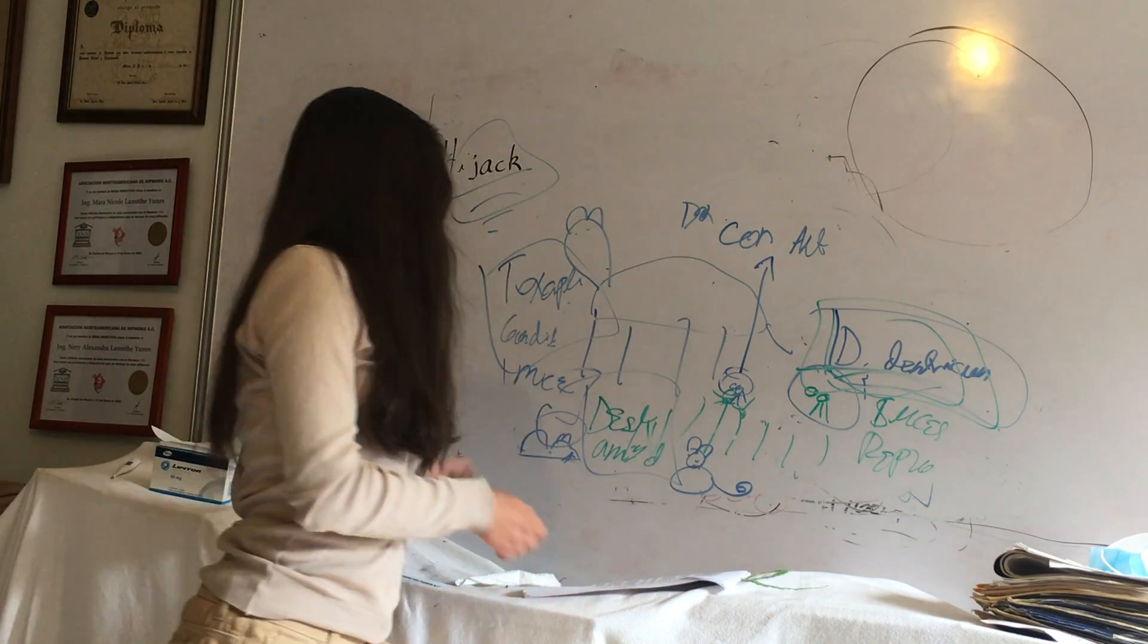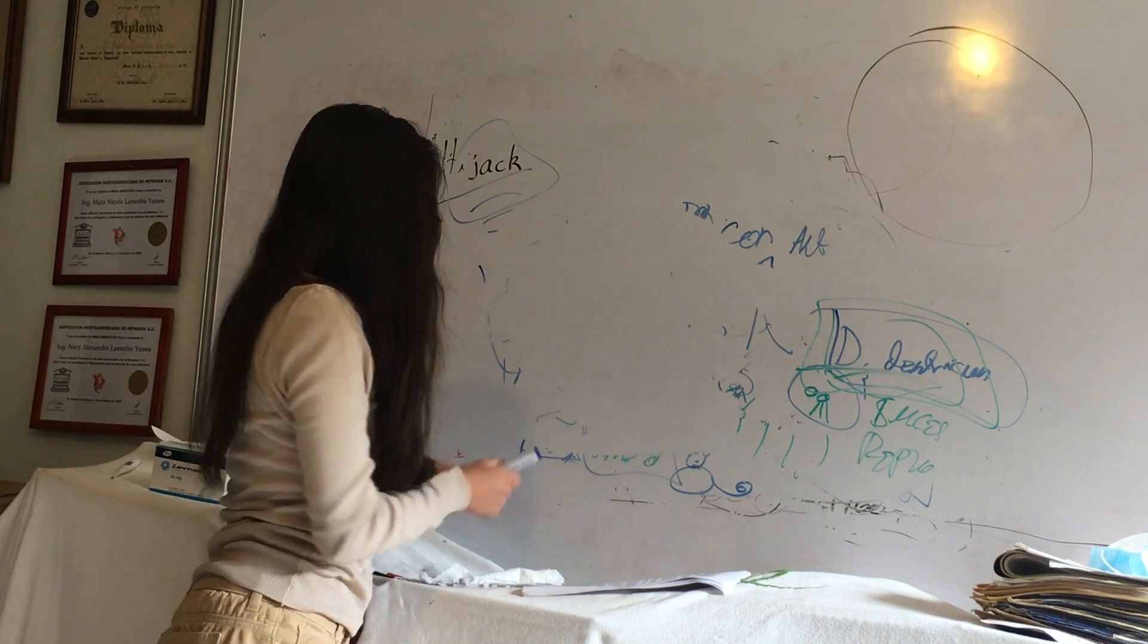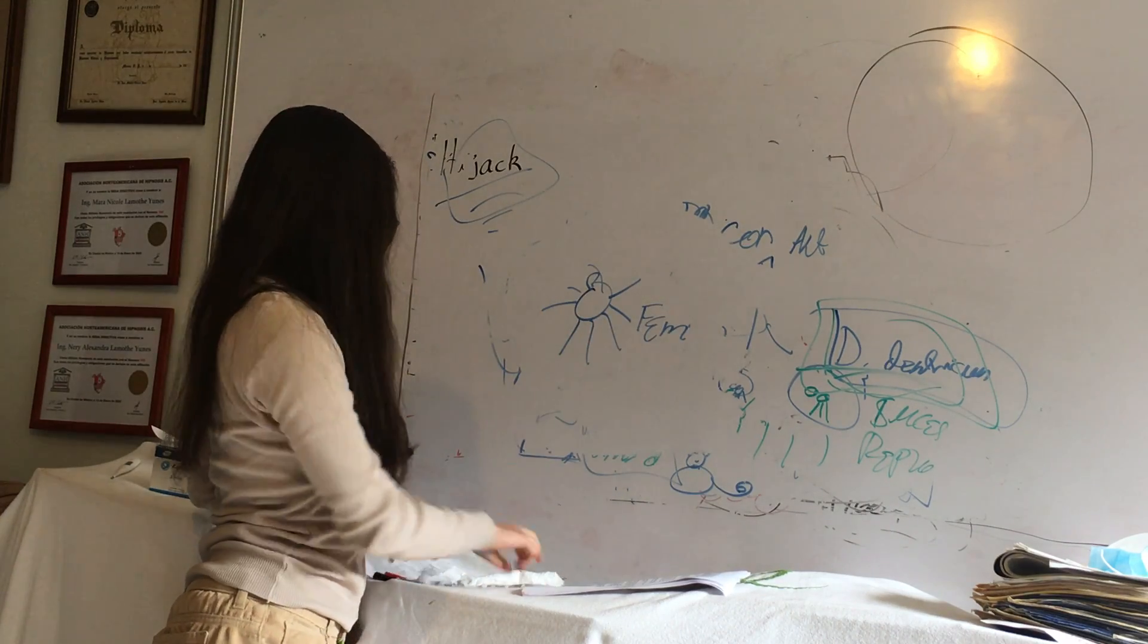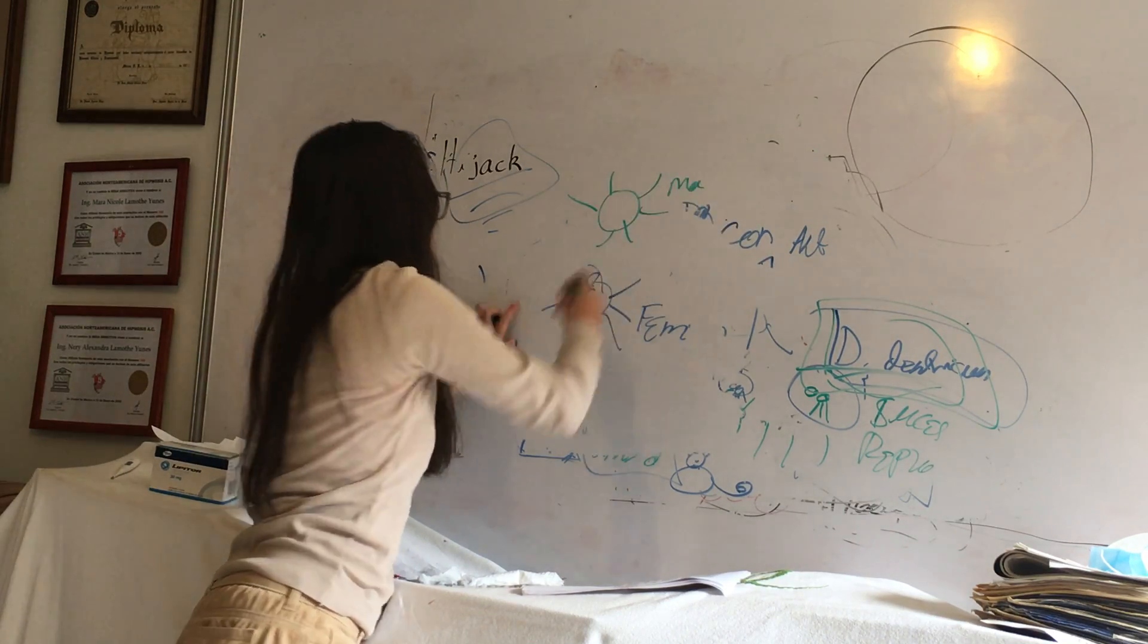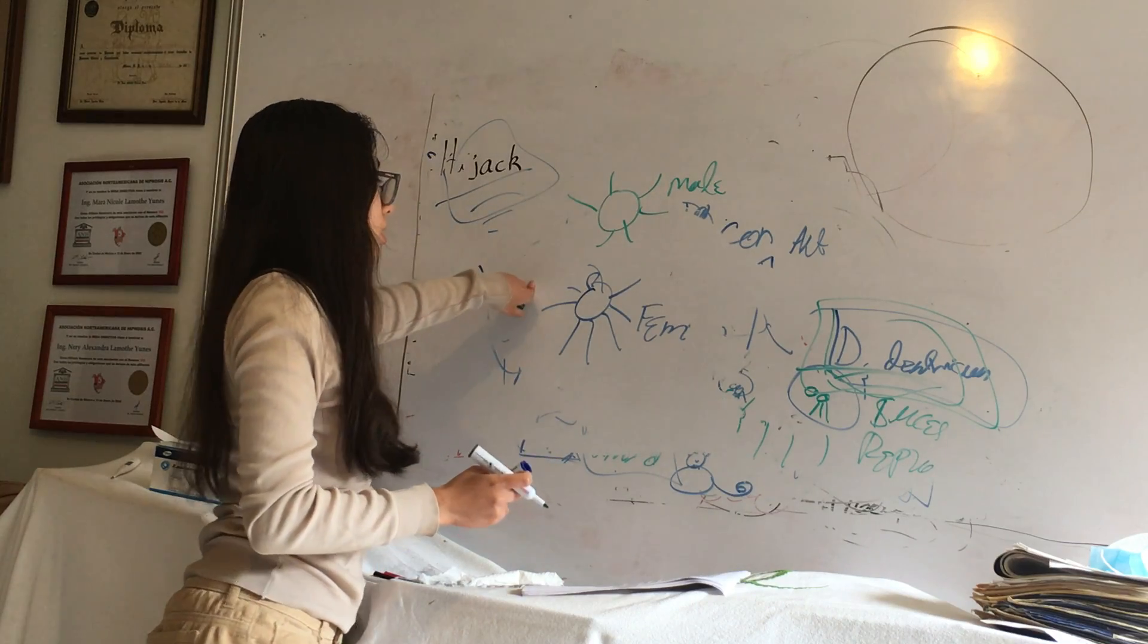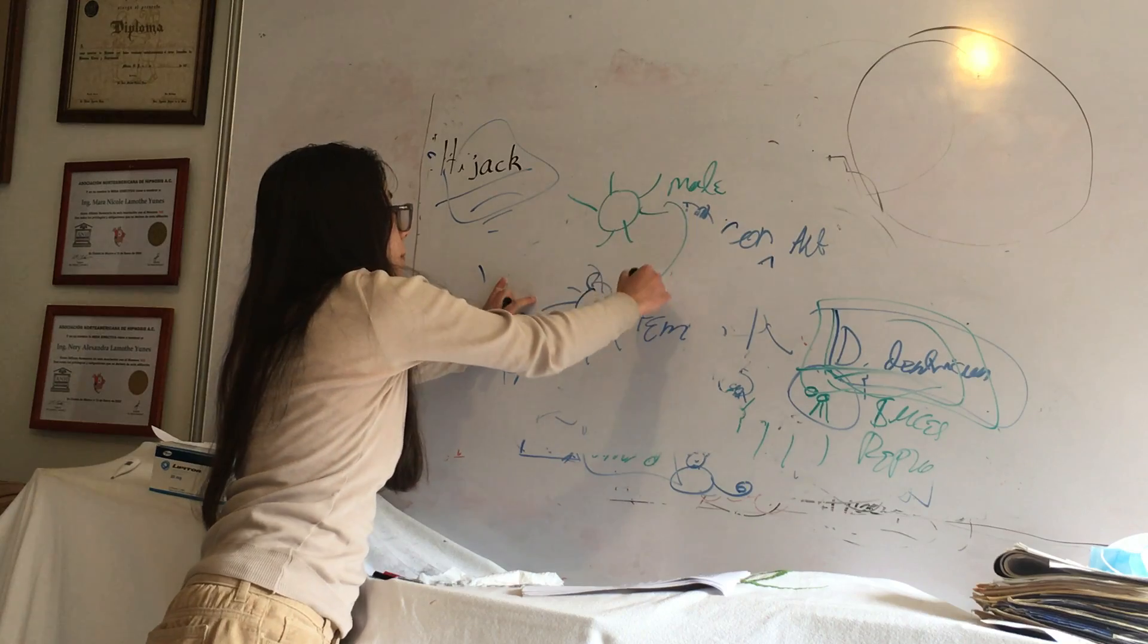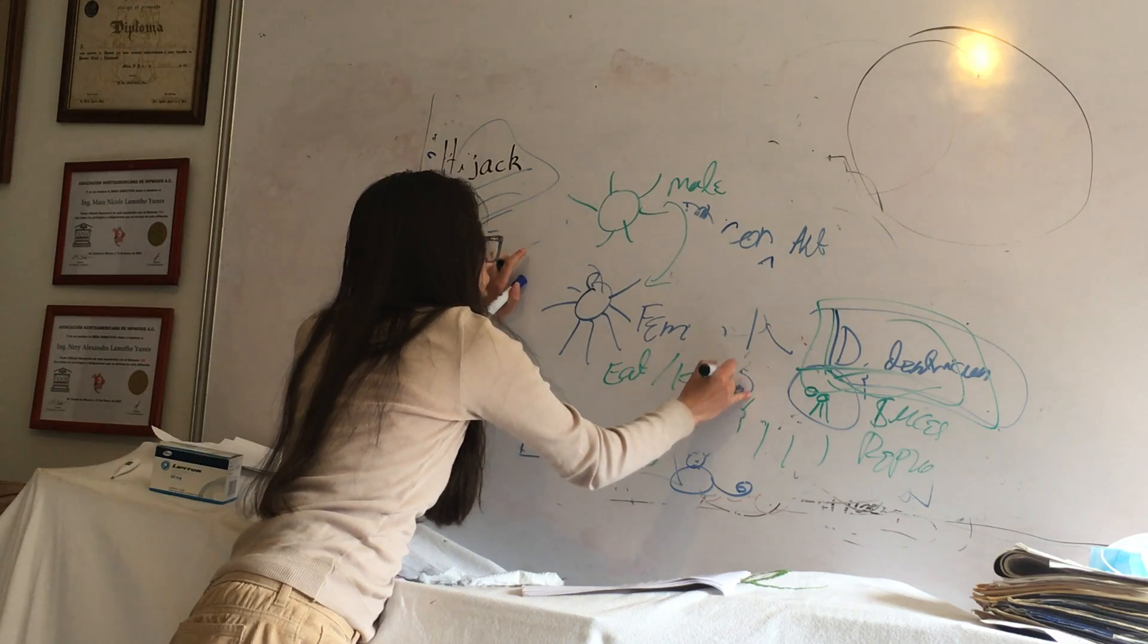Here we have the example of the black widow. This is a spider, the female spider called black widow. When the female met with the male, let's say this is the male—we are seeing them from top—when they meet, the male is going to fertilize the female, and the female is going to put eggs and all that. But at the moment, or almost at the moment when they meet, the female is going to eat and is going to kill the male.